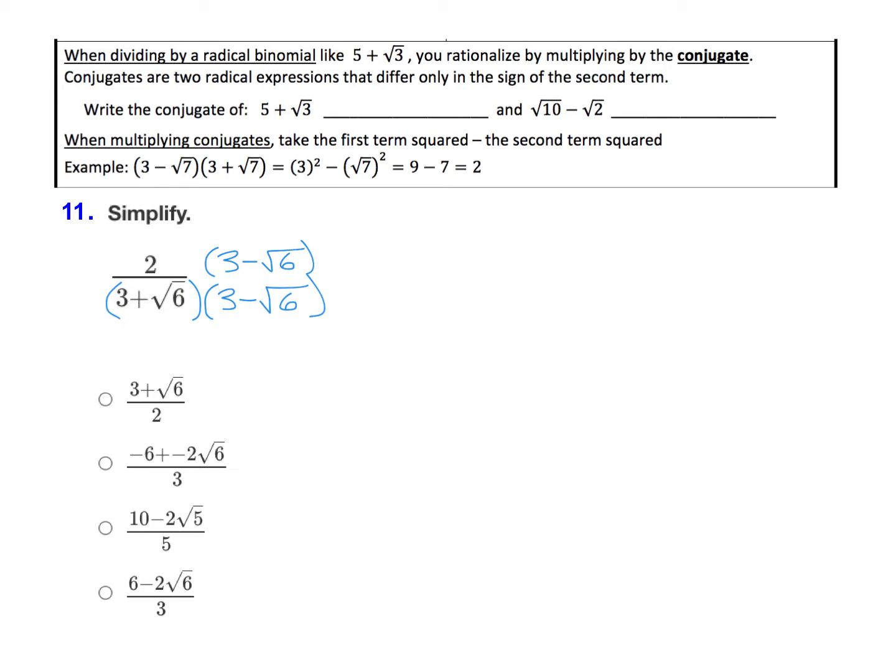I'm going to start with the bottom, and I'm going to use this trick right here. When multiplying conjugates, you take the first term squared minus the second term squared. So here my first term is 3, so I'm going to do 3 squared, then minus, my second term is root 6, so we have root 6 squared. Well, 3 squared is just 9, 3 times 3. And when we square a square root, that cancels the root out. Root 6 squared is just 6. So my bottom is just a 3.